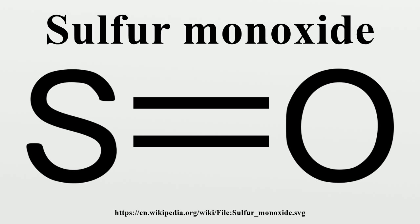Astrochemistry: Sulfur monoxide has been detected around Io, one of Jupiter's moons, both in the atmosphere and in the plasma torus. It has also been found in the atmosphere of Venus, in the Hale-Bopp comet, and in the interstellar medium.